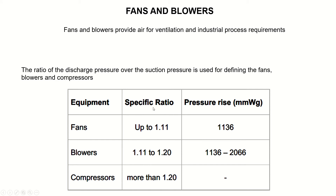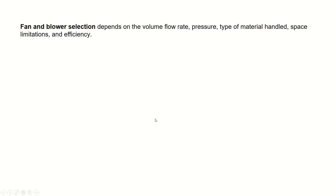Fans are typically used for low pressure applications. Blowers are used for medium range pressure applications, with a pressure ratio between 1.11 to 1.20. Compressors are used for high pressure applications where the pressure ratio is more than 1.20.